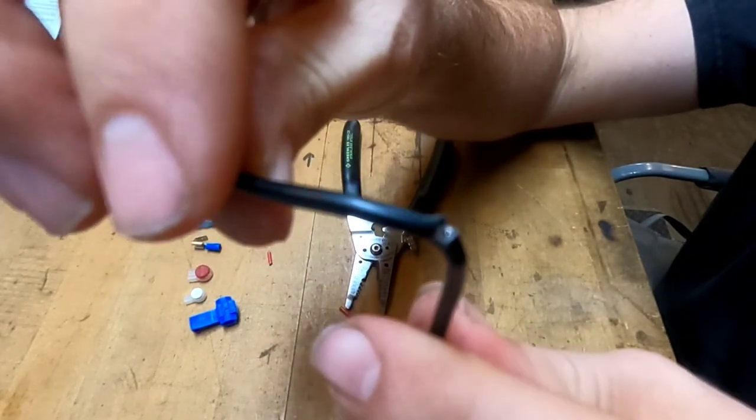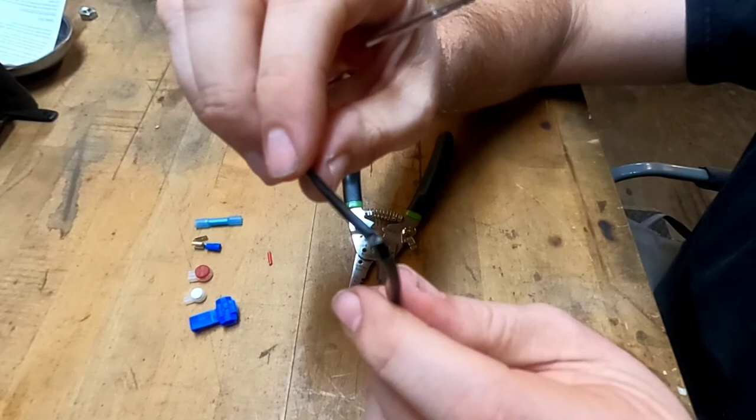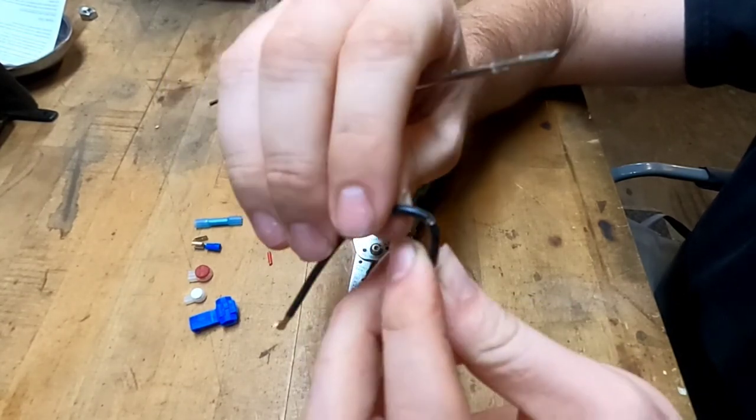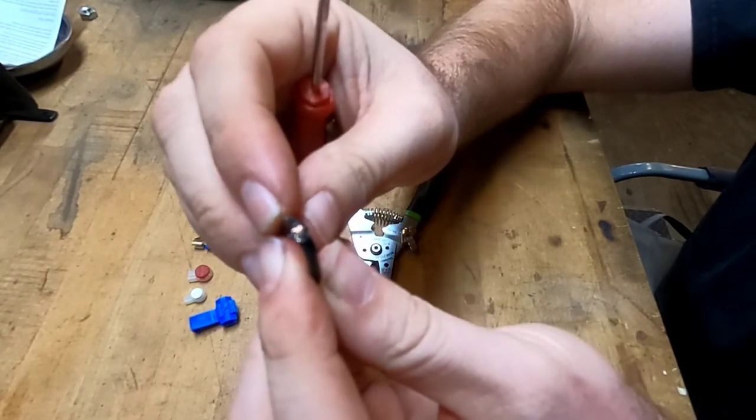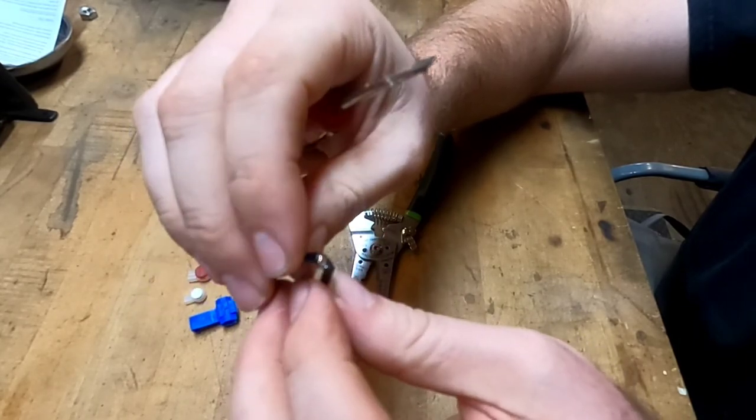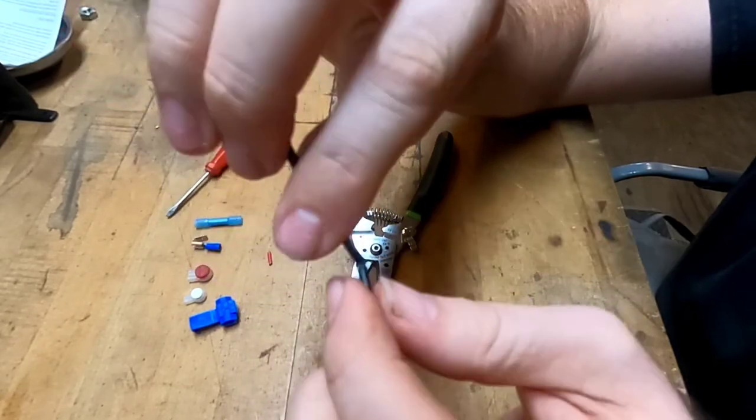So the black one, it did pierce the insulation and the conductor, but it also broke through some of the strands of conductor, which is not good, right? That actually increases the resistance in the circuit because we're losing strands to be able to pass current through this conductor, through this wire.